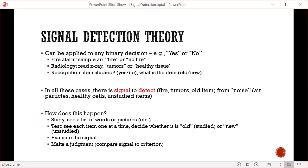How does this work in recognition memory? In a laboratory situation, you see a list of words or pictures - whatever the studied information is. Then you have a test where items are presented one at a time, and you decide whether it's old or new. In each case, the person evaluates the memory signal triggered by that probe and makes a judgment by comparing it to what's called a criterion.